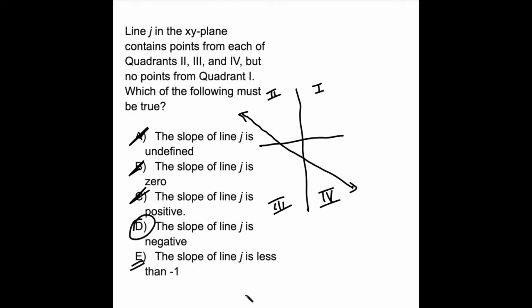However, we don't know exactly how negative. It could be greater than negative 1, it could be less than negative 1 — for instance, it could be negative 0.5. So the correct answer here is D.